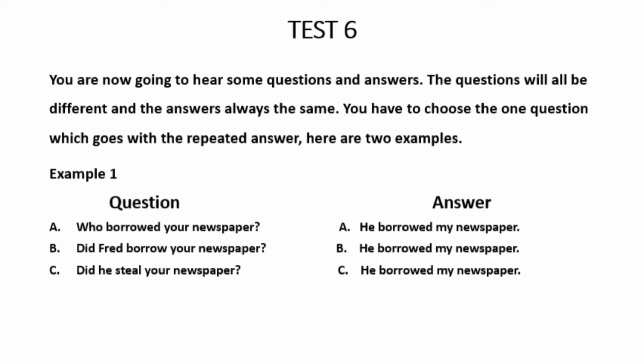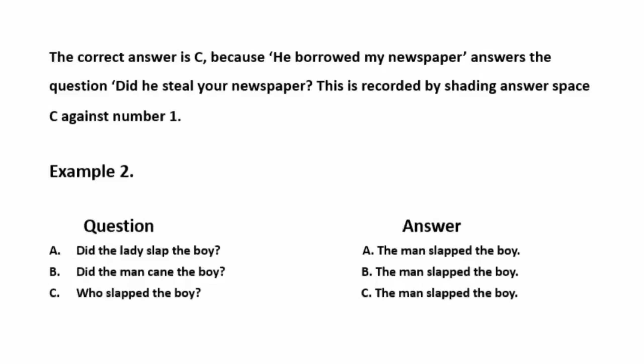Test 6. You are now going to hear some questions and answers. The questions will all be different and the answer is always the same. You have to choose the one question which goes with the repeated answer. Here are two examples. Who borrowed your newspaper? He borrowed my newspaper. Did Fred borrow your newspaper? He borrowed my newspaper. Did he tear your newspaper? He borrowed my newspaper. The correct answer is C because he borrowed my newspaper answers the question. Did he steal your newspaper? This is recorded by shading answer space C against number 1.